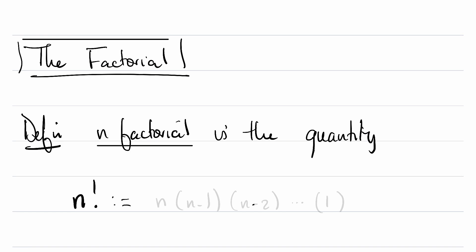which is just defined to be n times n minus 1 times n minus 2, all the way down until you reach 1. So you multiply all of these consecutive numbers from 1 up to n.